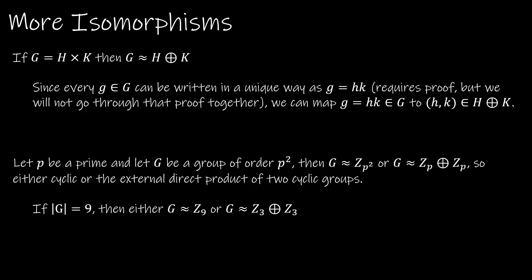Obviously, we have talked a lot about isomorphisms. So there are two properties here that are important. First of all, if you have an internal direct product, it's actually isomorphic to the external direct product. The reason this works is that every g that's an element of G can be written in a unique way, such that g equals hk. That requires some proof, but we're not going to go through that proof. But because it is unique, then we can map the hk in my internal direct product to the (h, k) in the external direct product.